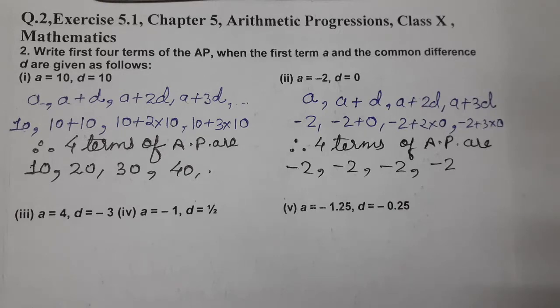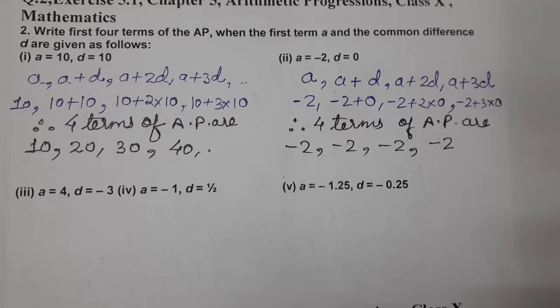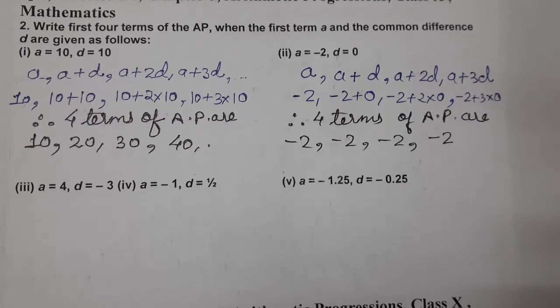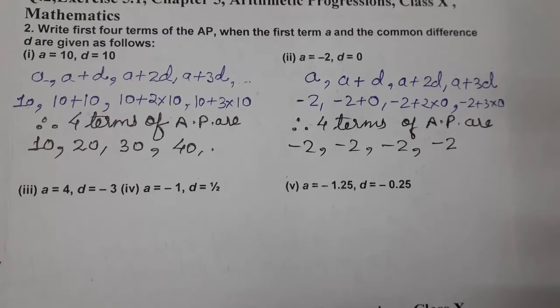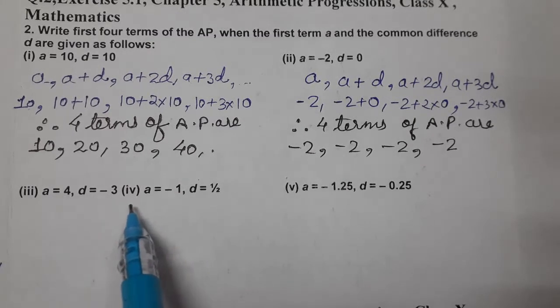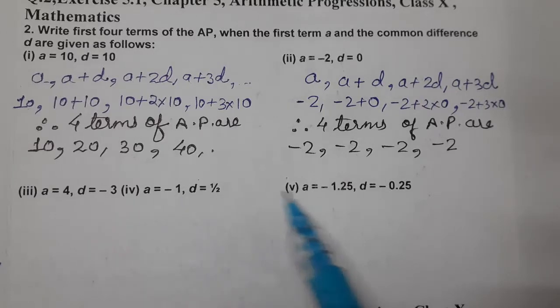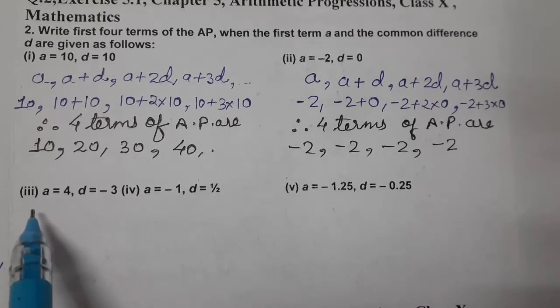Next comes, question number 3. A equals to 4, D equals to minus 3. And 4th is A minus 1, D half and there are 3 questions. Now, let's do one by one all.